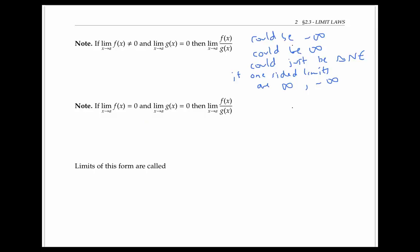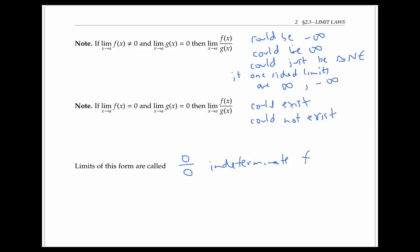What about the second situation mentioned at the beginning — when both the limit of f(x) and the limit of g(x) are zero? What can we say about the limit of the quotient? In this situation, the limit of the quotient could exist and be any finite number, or infinity, or negative infinity, or it could not exist at all. This is called a zero-over-zero indeterminate form — anything could happen, which makes it in some ways the hardest but also the most fun situation. In another video, we'll talk about techniques for dealing with zero-over-zero indeterminate forms, and how to use algebra and other simplification techniques to evaluate these mysterious limits.